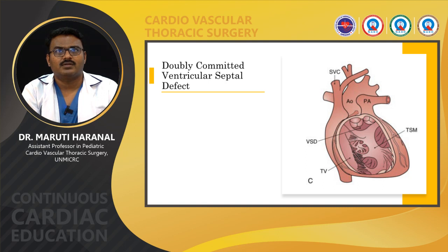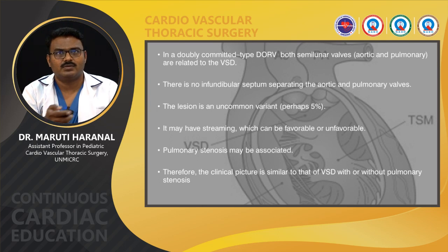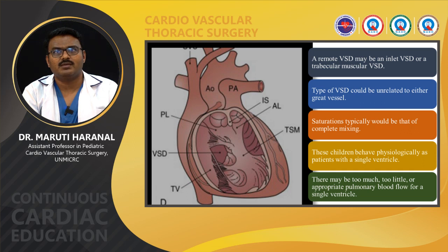In doubly committed VSD, both semilunar valves are associated with the VSD and there is no infundibular septum separating the aortic and pulmonary valves. This is an uncommon variant representing around 5% of DORV cases, with streaming that may be favorable or unfavorable, and pulmonary stenosis may be associated. The clinical picture is similar to that of VSD with or without pulmonary stenosis. In remote or non-committed VSD — which may be an inlet or trabecular muscular VSD unrelated to either great vessel — saturations are typically those of complete mixing, and these children behave physiologically as patients with a single ventricle, with variable pulmonary blood flow.